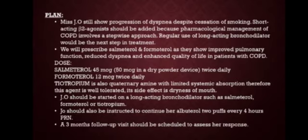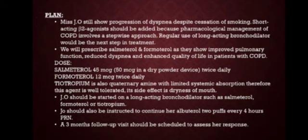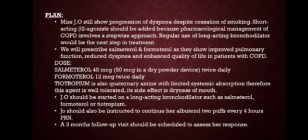Plan: Ms. Jo still shows progression of dyspnea despite cessation of smoking. A short-acting beta-2 agonist should be added as pharmacological management of COPD involves a stepwise approach. If short-acting beta-2 agonists do not show good results, we can start long-acting bronchodilators. Regular use of long-acting bronchodilators is the next step. We will prescribe salmeterol and formoterol as they show improved pulmonary function, reduced dyspnea, and enhanced quality of life. Doses: salmeterol 45 mcg and 50 mcg in a dry powder device twice daily, and formoterol 12 mcg twice daily.